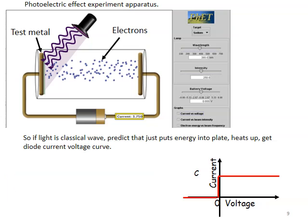All right. So what's going on here? If light is a classical wave, a prediction is that we just put energy into the plate, so we heat up the plate, and we get a diode current that comes across. It's zero current until you get to zero voltage, the positive voltage, and then the current remains constant. So we heat up the test metal with our light, and we get electrons to flow across.